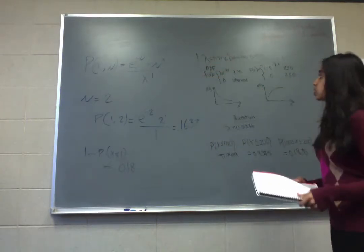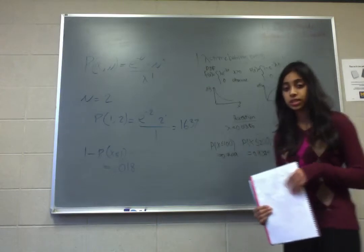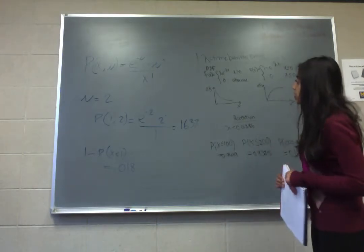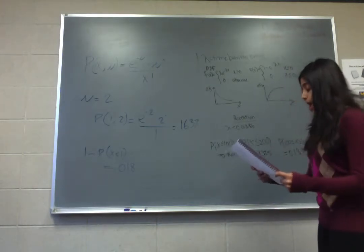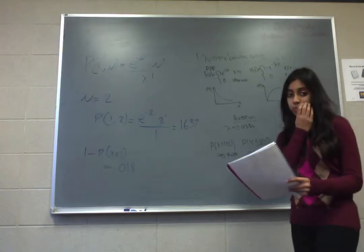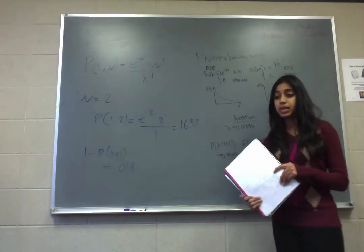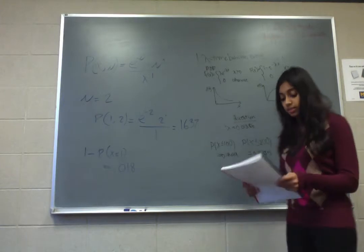Unlike the Poisson distribution, the exponential distribution is continuous, so the random variable can take any value. Also, the exponential distribution is memoryless, so the amount of time that's elapsed before the time you're analyzing does not matter.